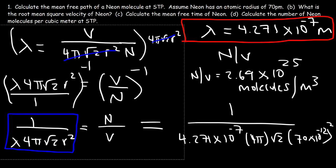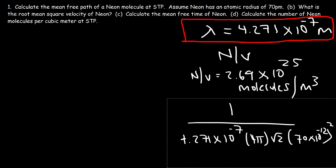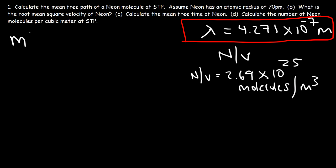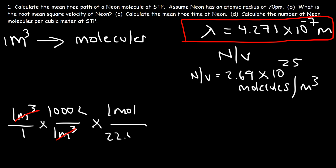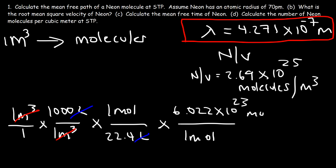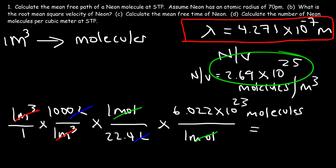Now let's talk about other ways to get that same answer. What we could do is convert 1 cubic meter to the number of molecules. It's important to understand that 1 cubic meter is equivalent to 1,000 liters. At STP, 1 mole of gas has a volume of 22.4 liters. Using Avogadro's number to convert from moles to molecules — 1 mole is 6.022 times 10 to the 23 molecules — if you take 1,000 divided by 22.4 and multiply by 6.022 times 10 to the 23, you get the same answer: 2.69 times 10 to the 25.